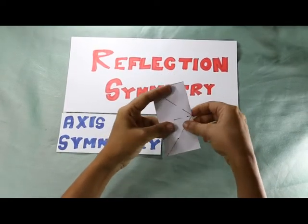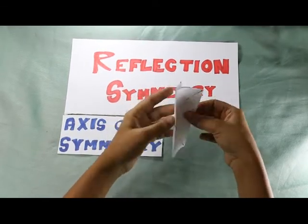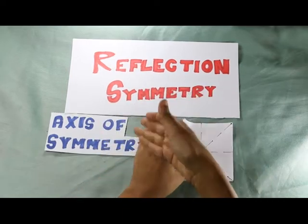As you can see, the two sides of the square overlap perfectly along the dotted line. Hence, the figure shows reflection symmetry and the dotted line is an axis of symmetry.